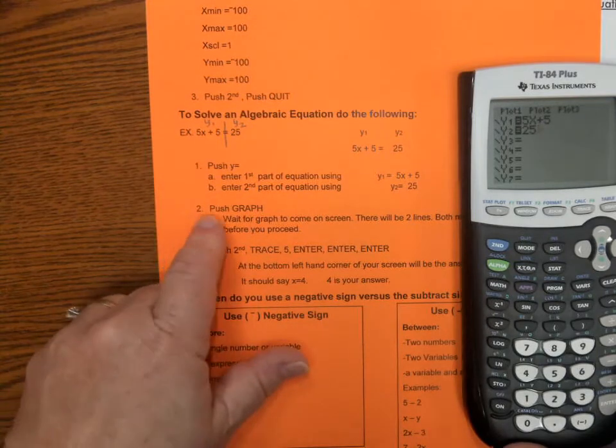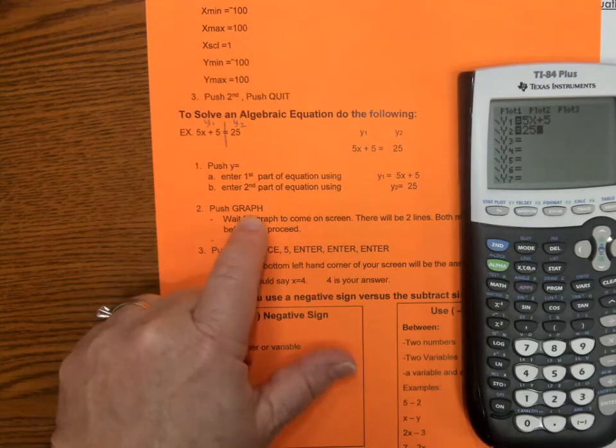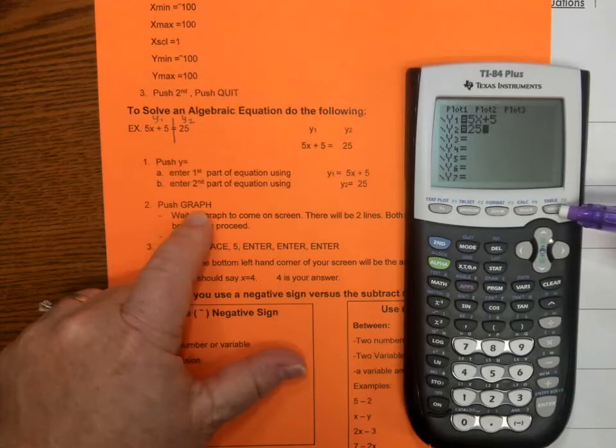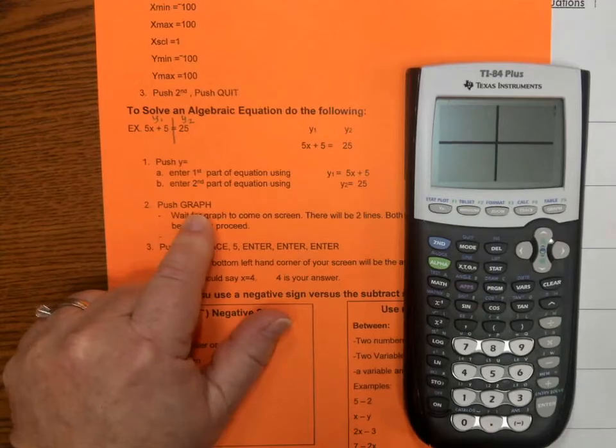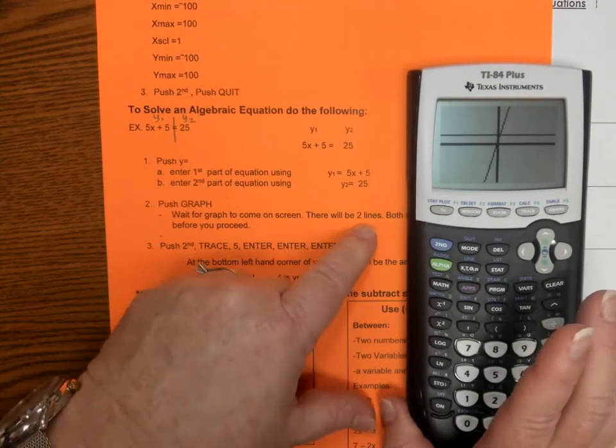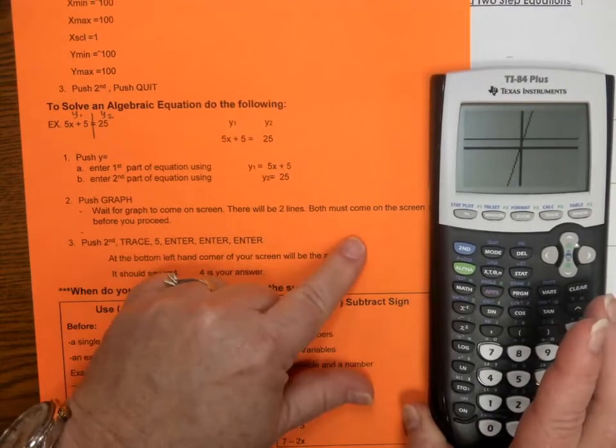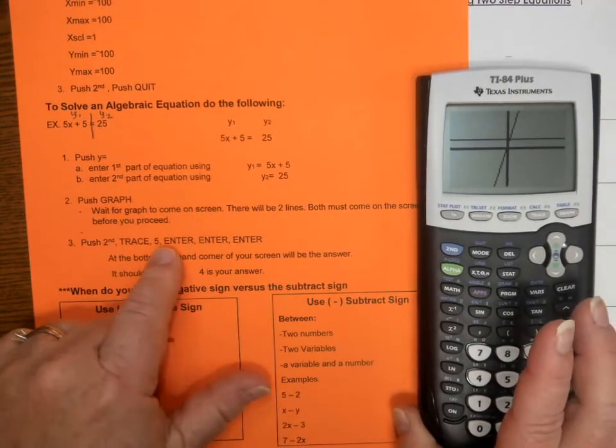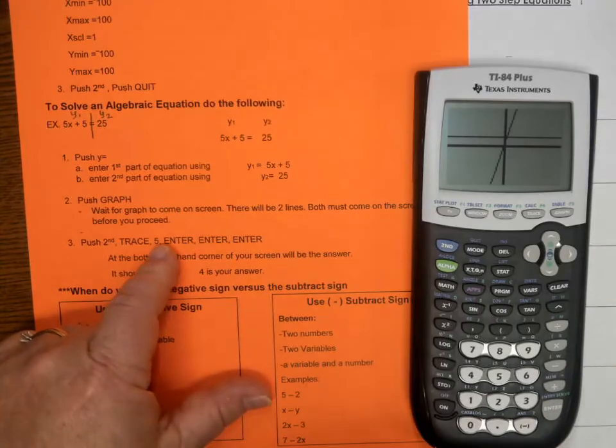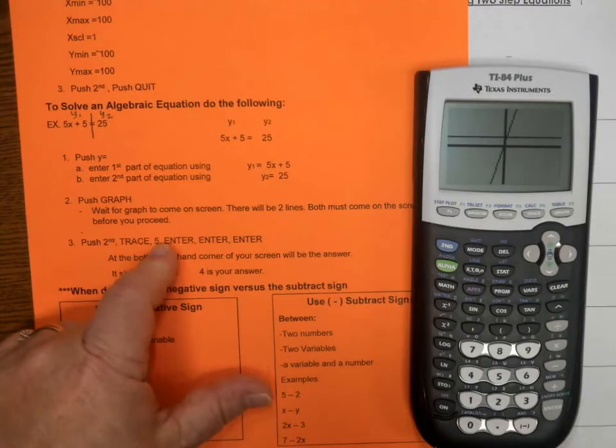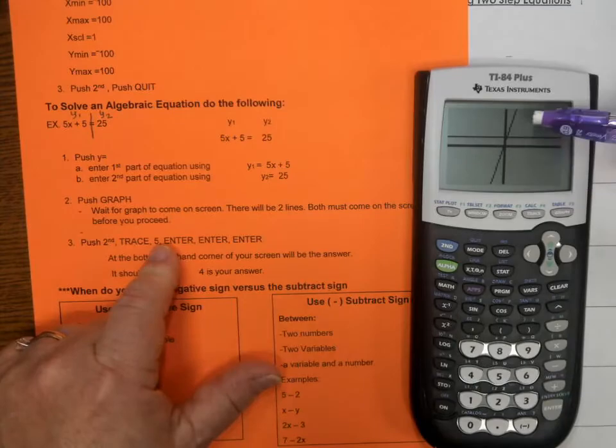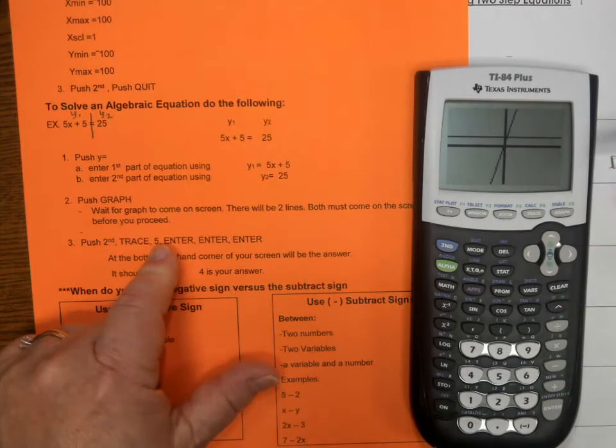Next step, it says push graph. Well, the graph key is right up here. Right here in the corner. So, you press graph. Then it says wait for the graph to come on the screen. There will be two lines. Both must come on the screen before you proceed. Some of you have calculators where they'll be two different colors. Some of you have calculators where it'll just be one color. It'll all be black. That's fine. So, I have my two lines. Sometimes it takes a little while for that second line to come. So, you have to wait.